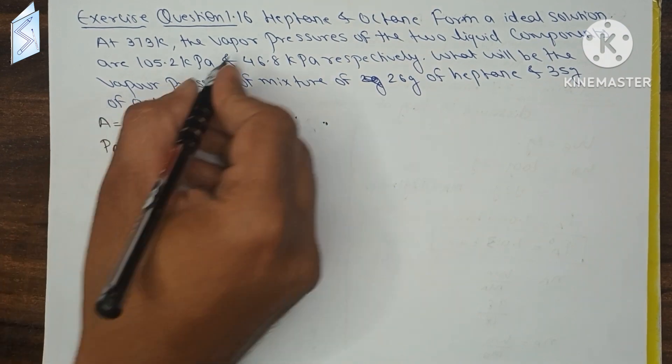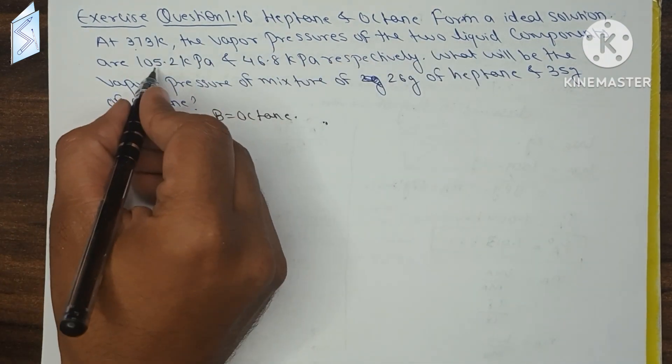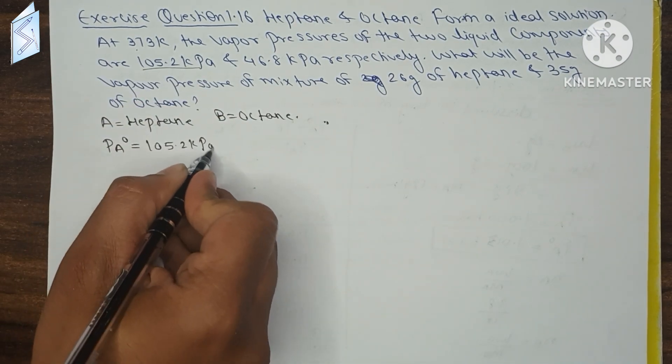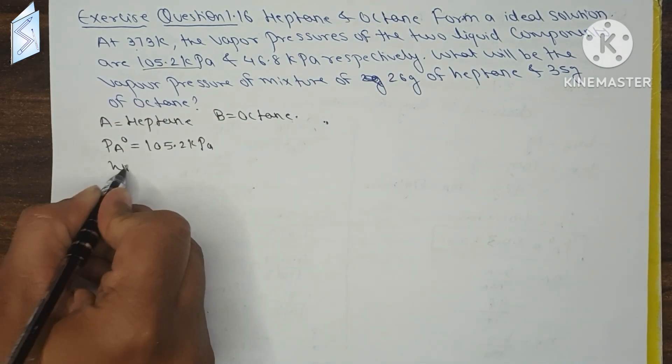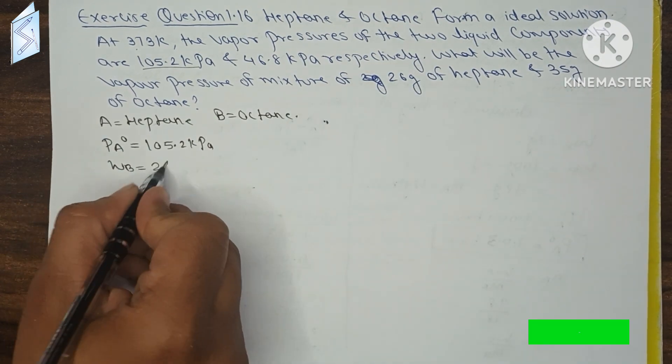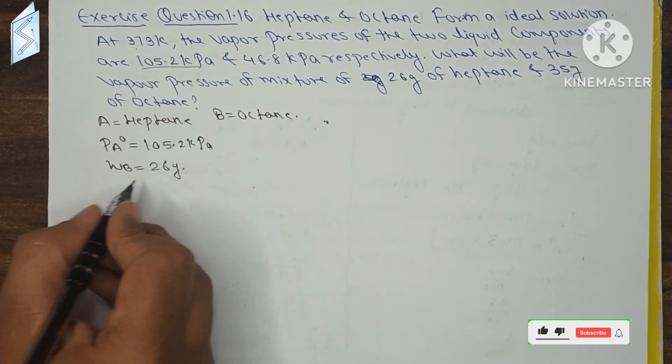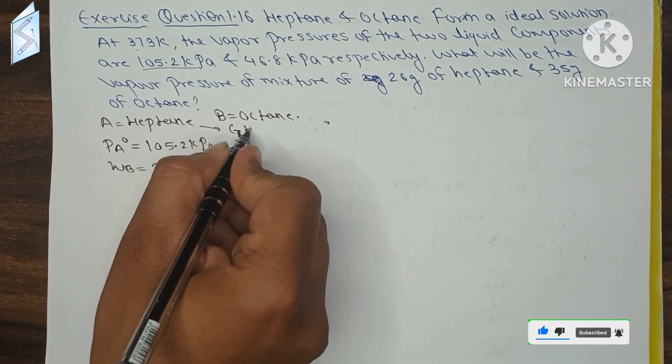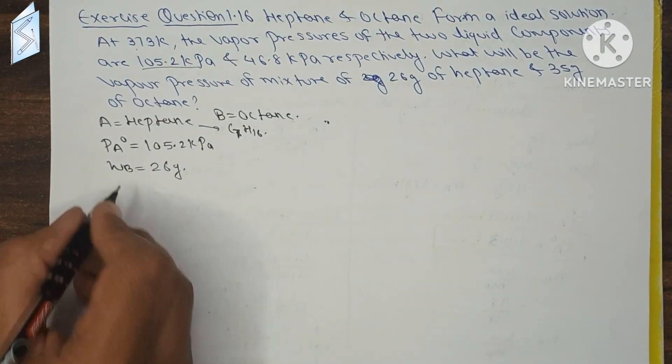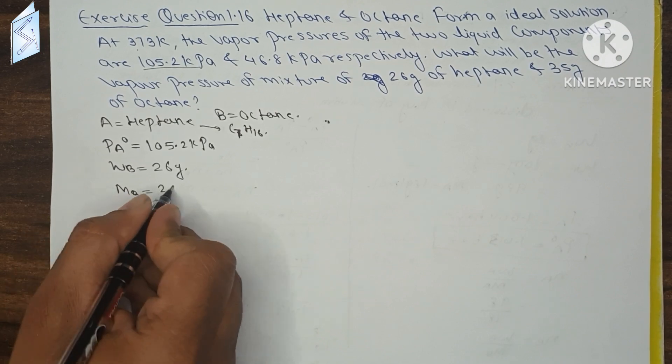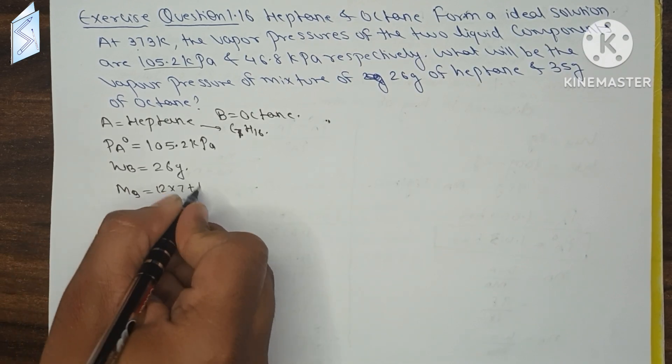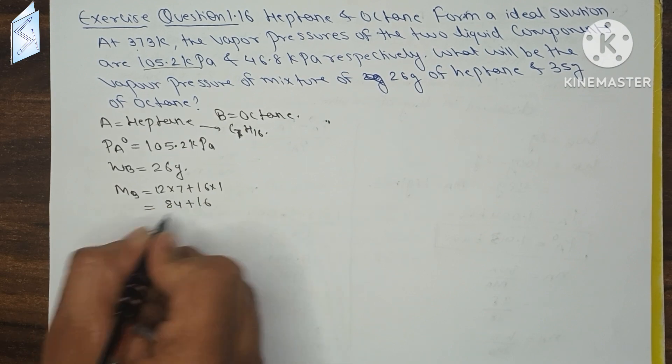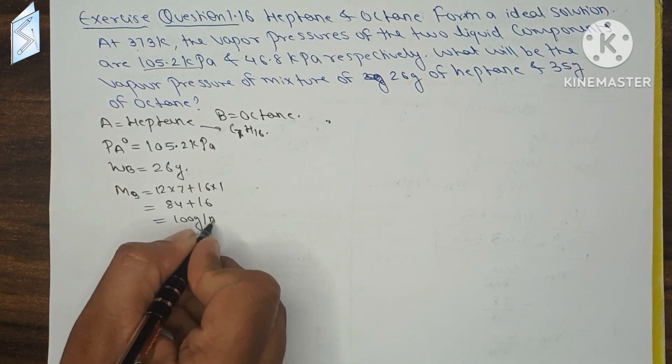Now PA0 is given at 373 Kelvin. Heptane is 105.2 kilopascal. The mass we have dissolved is 26 g. So heptane molecular formula C7H16, molar mass 12 times 7 plus 16 times 1, that is 84 plus 16, equals 100 g per mol.